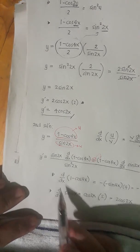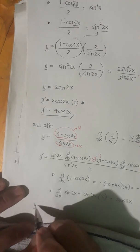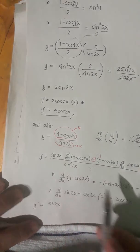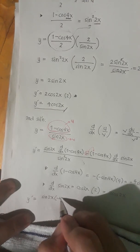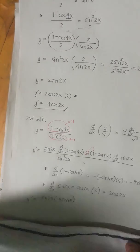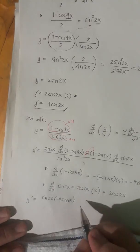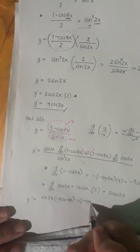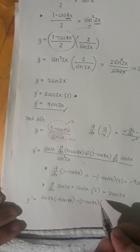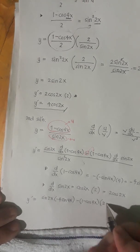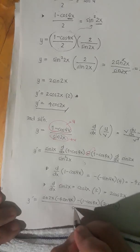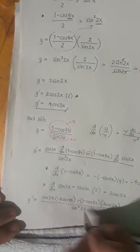Substituting into the quotient rule equation, y prime equals sine of 2x times negative 4 sine of 4x, minus (1 minus cosine of 4x) times 2 cosine of 2x, all over sine squared of 2x.